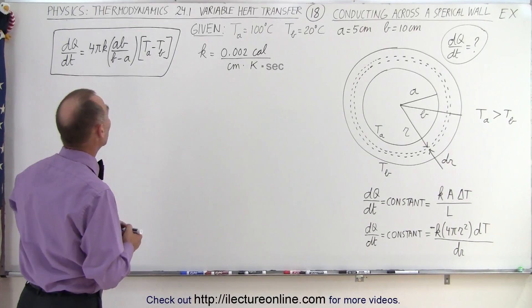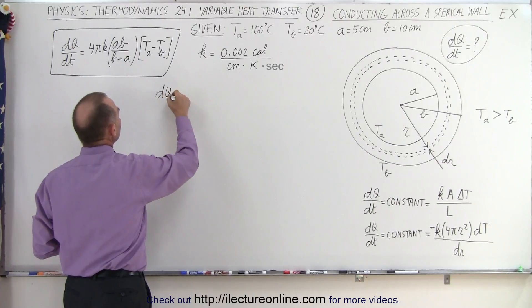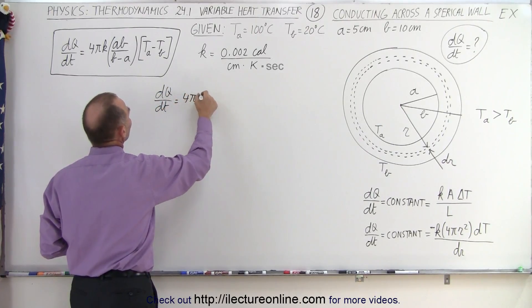So let's plug everything into the equation and see what we get. So in this case we get dQ/dt is equal to 4π times K.